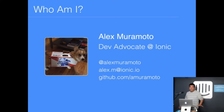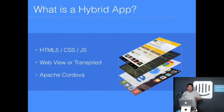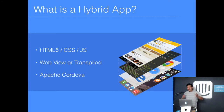Before I get into details, who knows what hybrid app development is? Just a quick rundown for anyone who's not familiar: traditionally when we talk about hybrid mobile app development, we're talking about a mobile app for your phone or tablet that is built with standard web technologies — HTML5, CSS, JavaScript. Then we wrap our code into a native executable, like an IPA file on iOS or an APK file on Android.